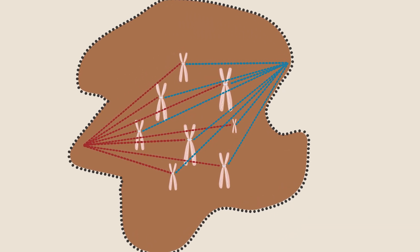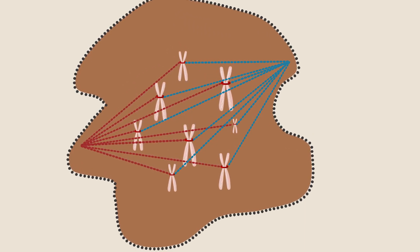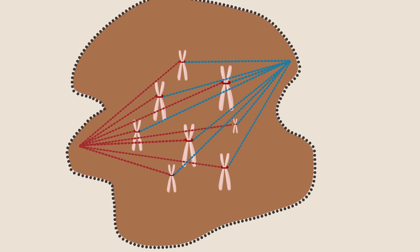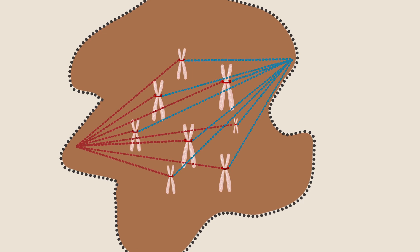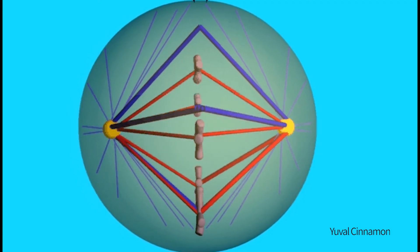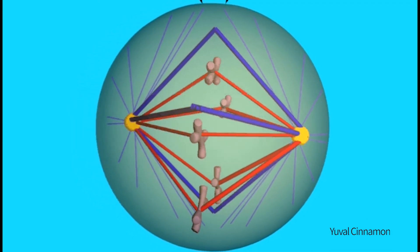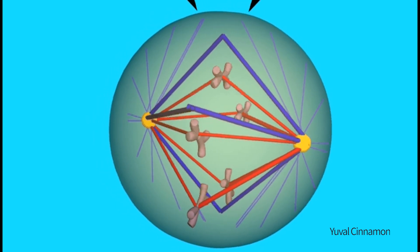The cell has a special mechanism that ensures that mitosis will proceed only when all chromosomes are correctly attached to the spindle. As this happens, the proteins that hold the sisters together are cleaved and the sister chromatids separate, and are pulled to the opposite poles of the cell.